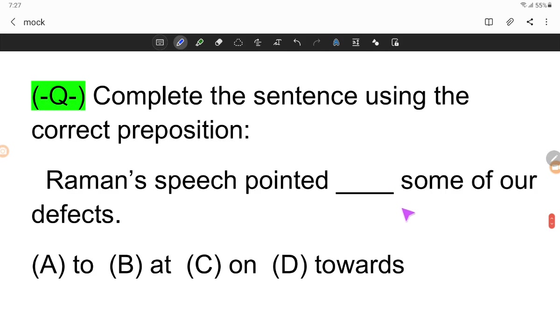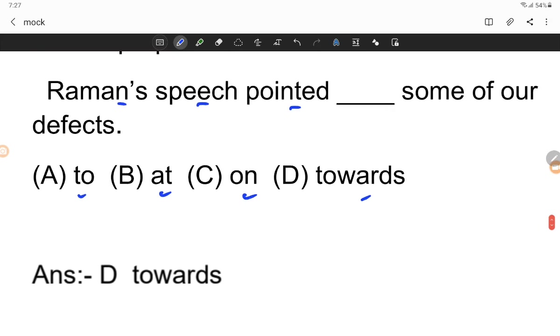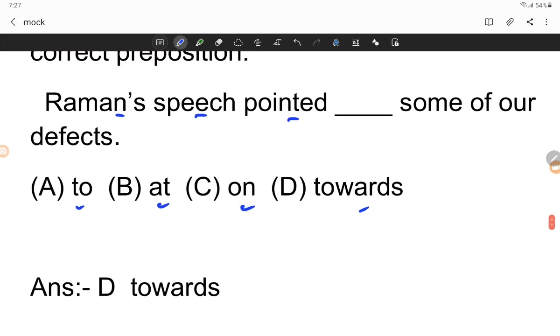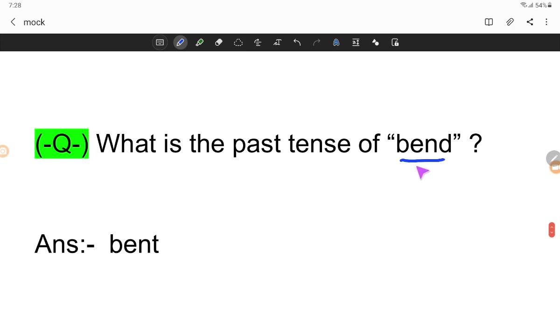Complete the sentence using the correct preposition: Romans pointed towards some of our defects. What is the past tense of bend? Bent - B-E-N-D becomes bent.